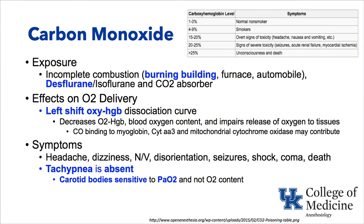We'll start with carbon monoxide. Normally, carbon monoxide levels are less than approximately 3% in non-smokers. In smokers, the carboxyhemoglobin level can get up in the range of 4% to 9%. If we are exposed to incomplete combustion, such as in a burning building, a furnace that is not working properly, or automobile exhaust, our carboxyhemoglobin levels can rise. When they get into the 15% to 20% range, overt signs of toxicity such as headache, nausea, and vomiting can occur.